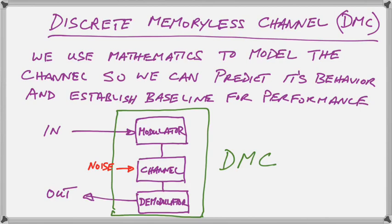So we take the channel and the modulator and demodulator and we call that model a discrete memoryless channel. Discrete just means that it goes in steps rather than continuous or analog. Memoryless means it doesn't have any memory or there's no storage capability in it.